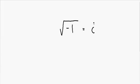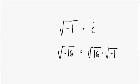We can use this imaginary number i to find the value of any negative square root. Let's say we have the square root of negative 16. The square root of negative 16 is equal to the square root of positive 16 times the square root of negative 1, because positive 16 times negative 1 equals negative 16. We know the square root of positive 16 is 4, and the square root of negative 1 is i. So the square root of negative 16 is equal to 4i.